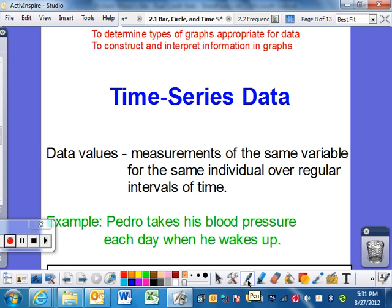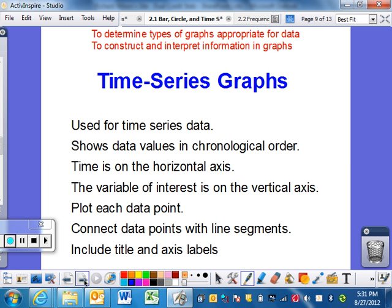Put the days on the bottom, whatever his blood pressure is going up. Use for time series data. Shows values in chronological order. Make sure you go in chronological order. Time is always on the horizontal axis. Variable is on the vertical. Plot each point. Connect the dots with line segments.